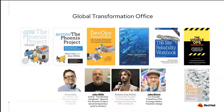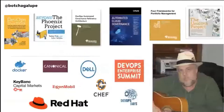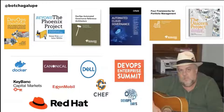Our Global Transformation Office team includes Andrew Clay Shafer, Kevin Behr who co-authored The Phoenix Project, myself, and Jabe Bloom. Between us we've written or collaborated on works like Beyond the Phoenix Project, the DevOps Handbook — whose five-year anniversary revised edition is coming up — as well as Web Operations, Site Reliability, Visible Ops, and The Unicorn Project.